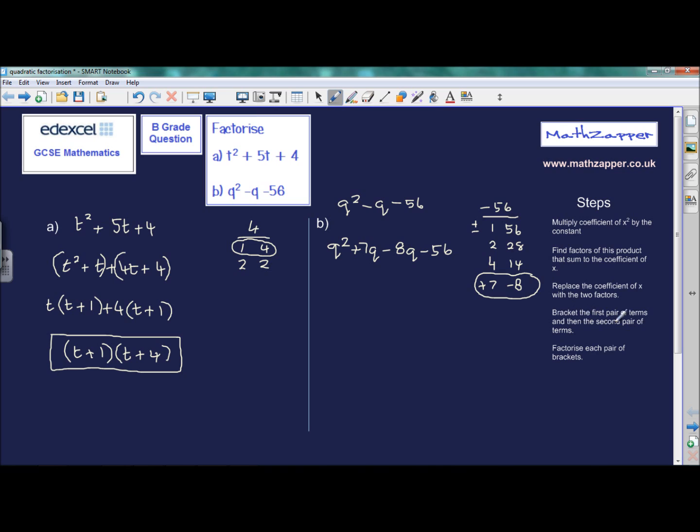Now, bracket the first pair of terms and then the second pair of terms. So the bracket now goes in, leaving a minus in between them, and then factorize each pair of brackets. What's the highest common factor of q squared plus 7q? That will be q, so we take that outside. We multiply q by q to get q squared. We multiply q by 7 to get 7q. Put the minus in.